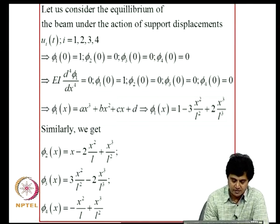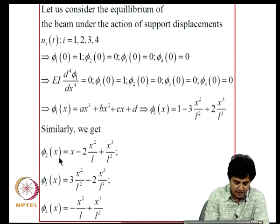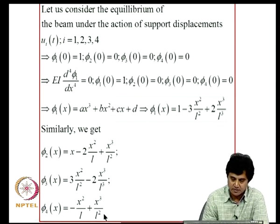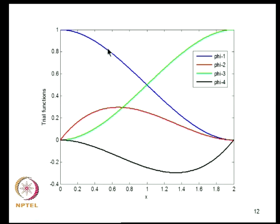The resulting shape functions look as follows: phi1(X) is a cubic (blue curve) with value 1 and slope 0 at X=0, and value 0 and slope 0 at X=L. phi2(X) has value 0 and slope 1 at X=0, and value 0 and slope 0 at X=L. phi3 and phi4 are defined analogously for the right node. These four cubic polynomial interpolation functions are used to represent the beam behavior.